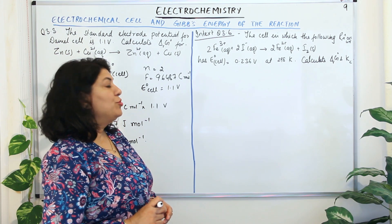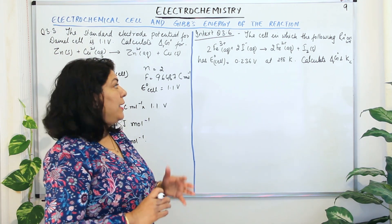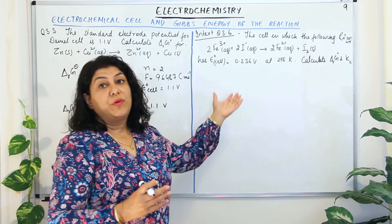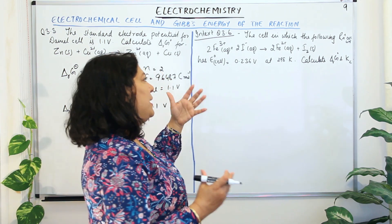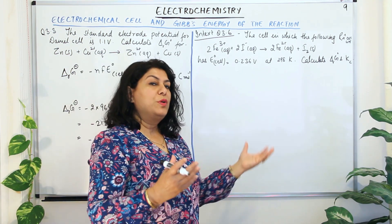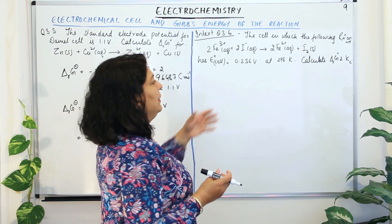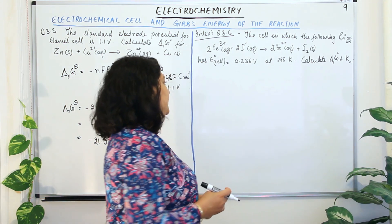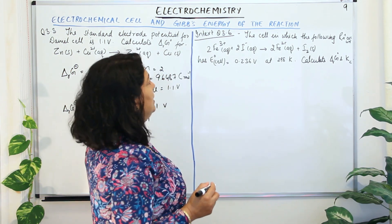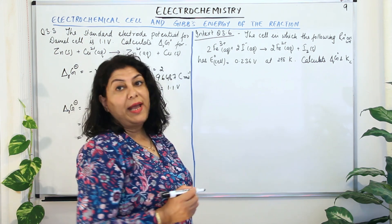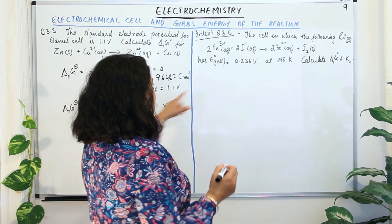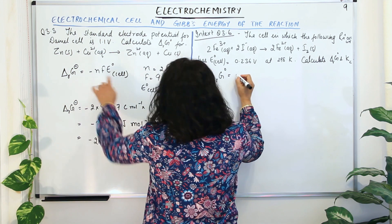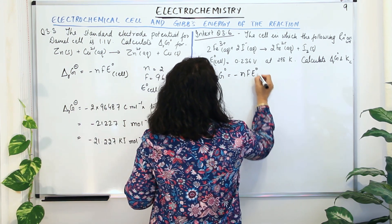The temperature is 298 Kelvin, which means standard conditions, and we are assuming unimolar quantities for all species. We need to calculate the standard free energy ΔrG° and the equilibrium constant Kc. In the first step, ΔrG° = −NF E° cell.